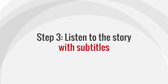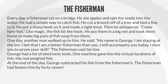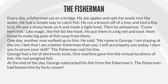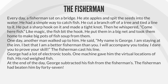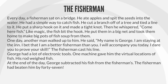Step 3: Listen to the story with subtitles. The Fisherman. Every day, a fisherman sat on a bridge. He ate apples and spit the seeds into the water. He had a simple way to catch fish. He cut a branch off of a tree and tied a line to it. He put a sharp hook on it and made a tight knot. Then he whispered, 'Come here, fish.' Like magic, the fish bit the hook. He put them in a big net and took them home to make big pots of fish soup from them.